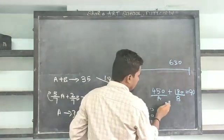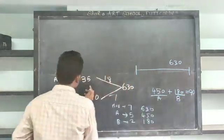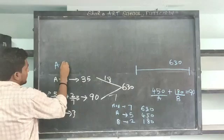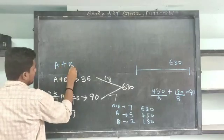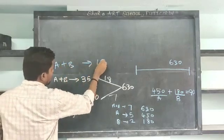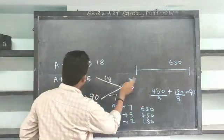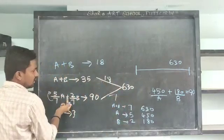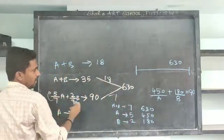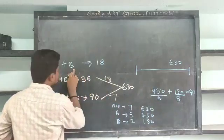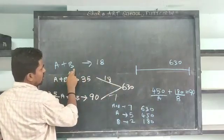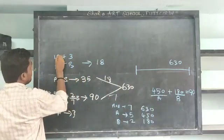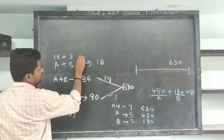You will find the value of A plus B. If you find the value of A plus B, A plus B will give you the result. You can correct the number of A plus B. This is 13 and this is 15. 2 add 18.